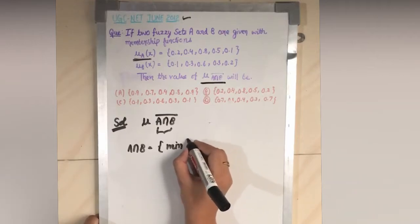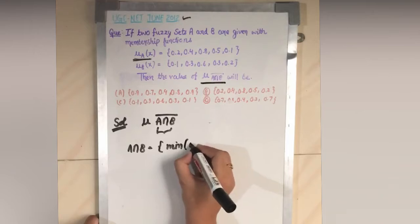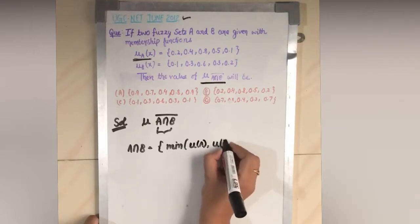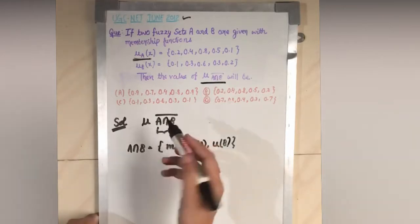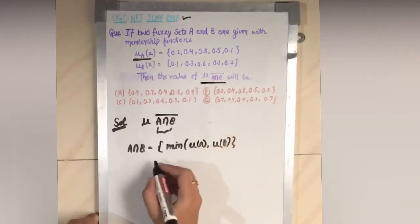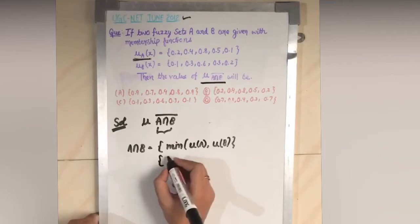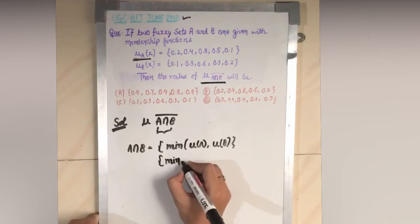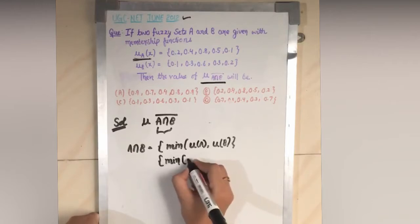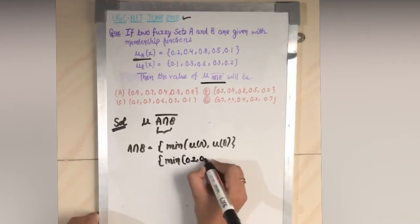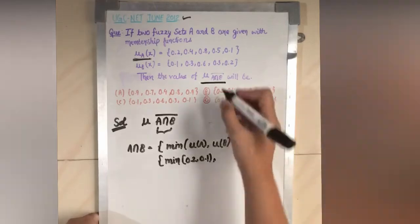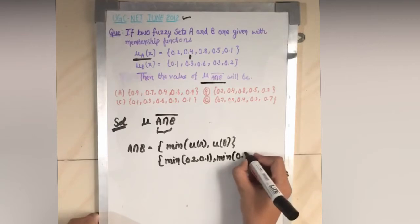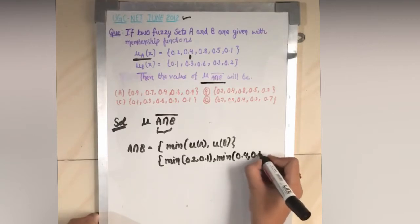For intersection, we have to find the minimum element — the minimum membership between A and B. Let's get started. We check the membership of A, which is 0.2, and B, which is 0.1 — so minimum of 0.2 and 0.1. Next, minimum of 0.4 and 0.3.